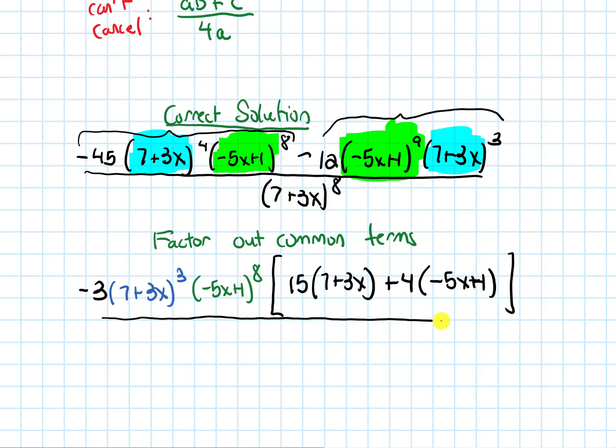And now all over the denominator, which is already factored, 7+3x to the 8th. Now this (7+3x)^3 is factored out on the top. So now I can cancel it with stuff on the bottom. I can cancel away three of those terms. And that'll leave me with five of them on the bottom.